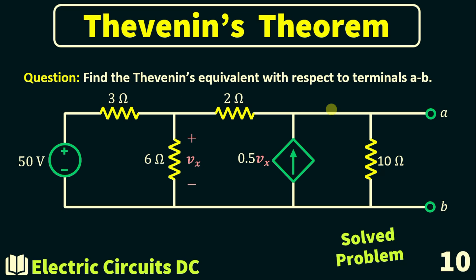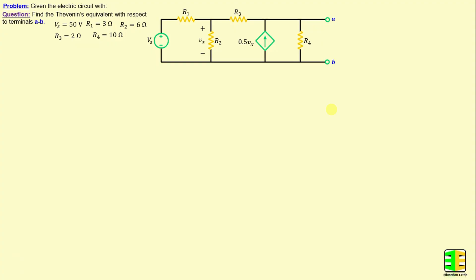Let's dive in and begin with solving problem number 10. Let's consider this network consisting of four resistors labeled R1 through R4, as well as one independent source Vs. Additionally, we can observe the presence of a dependent source, specifically a voltage-controlled current source.